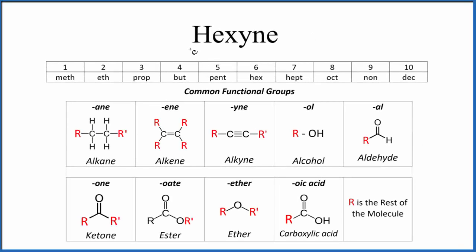Let's write the structural formula for hexyne. For hexyne, we can actually write the structural formula for three different isomers: 1-hexyne, 2-hexyne, and 3-hexyne. We'll look at each one of those.